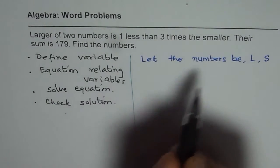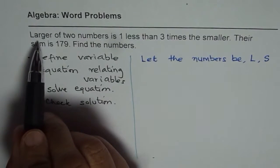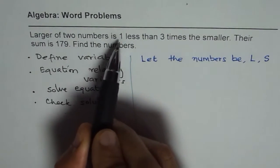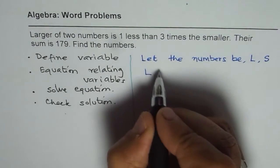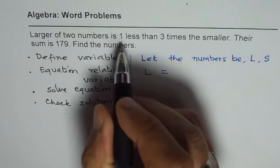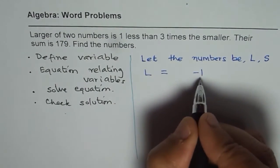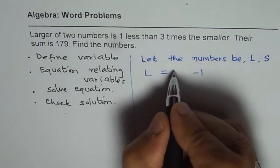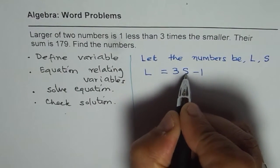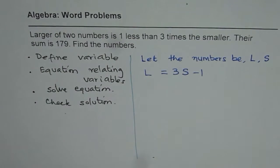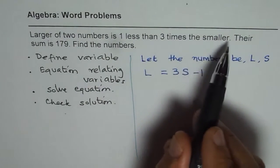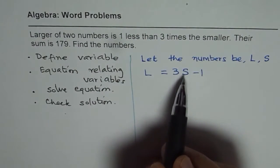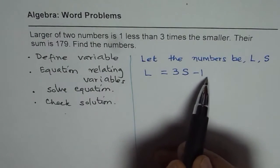We have defined the variables, now we need to write equation to relate them. The statement is: larger of the two numbers is one less than three times the smaller. So L equals one less than means minus one, three times smaller. So L = 3S - 1. Do not write 1 - 3S, it will be wrong.